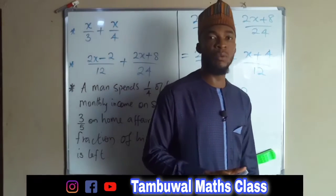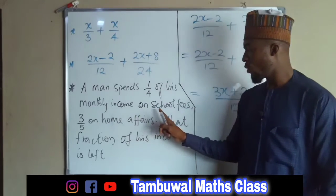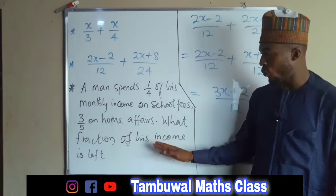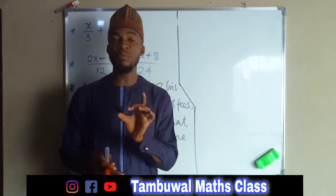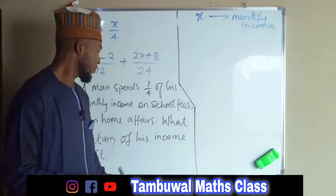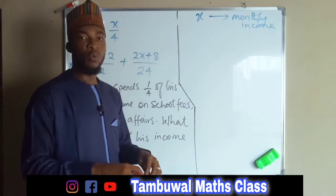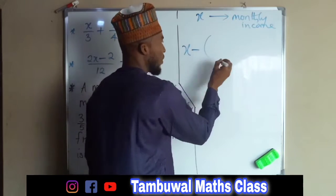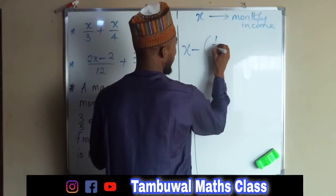Now let us move on to the last one, which is a word problem. A man spends one-fourth of his monthly income on school fees and three-fifths of his income on his home and office. What fraction of his income is left? We don't know his monthly income, so we represent it with x. Let his monthly income be x — one-fourth was spent on school fees and three-fifths was spent on home and office expenses. So we need: total amount x minus his total spendings.